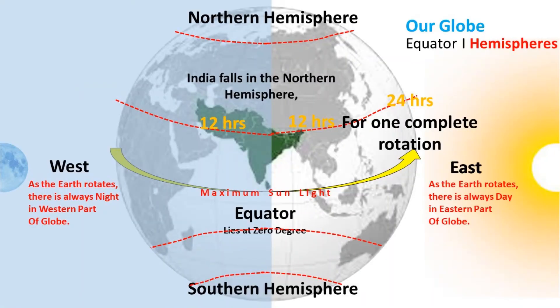Now let's look at the heat zones of the earth. The earth takes 24 hours for one complete rotation; the sun rises in the east and sets in the west. As the earth rotates, there is always day in the eastern part and night in the western part, each for 12 hours. Using the prime meridian as reference, for every one degree longitude to the east, four minutes are added to the time; for every one degree to the west, four minutes are subtracted.